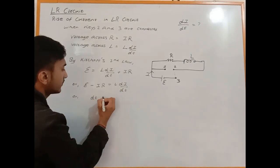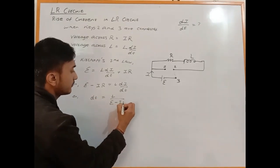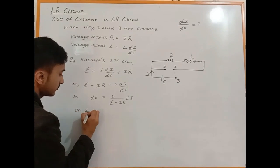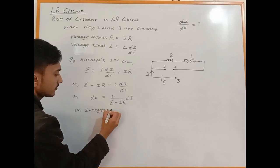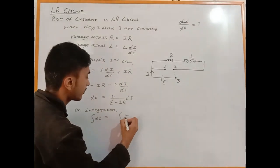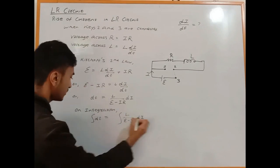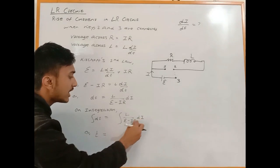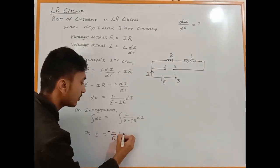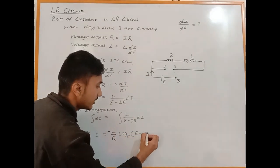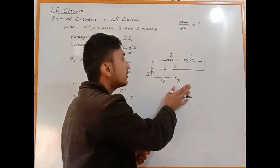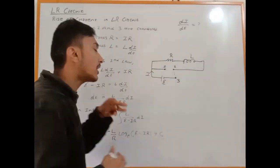Rearranging: dI/dt equals (E minus IR) divided by L. We can write this as L divided by (E minus IR) times dI equals dt. Now we'll integrate both sides. The integration of dt is t plus a constant.